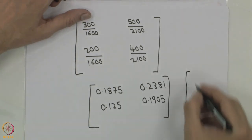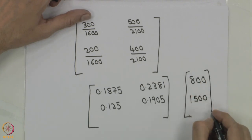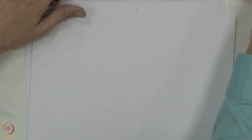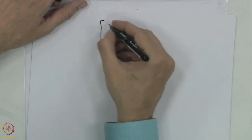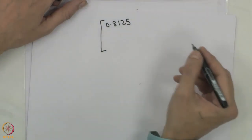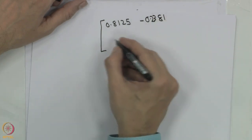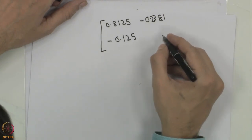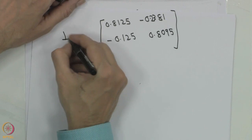Remember the F matrix is 800 and 1500. When we look at this A matrix, we can now calculate I minus A. I minus A becomes: 1 minus 0.1875 equals 0.8125 on the diagonal for agriculture, and 1 minus 0.1905 equals 0.8095 on the diagonal for manufacturing. The off-diagonal elements are negative 0.2381 and negative 0.125.